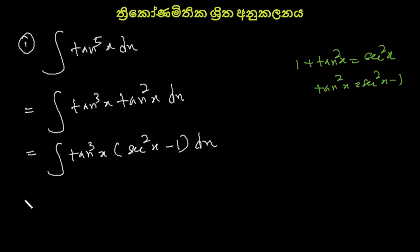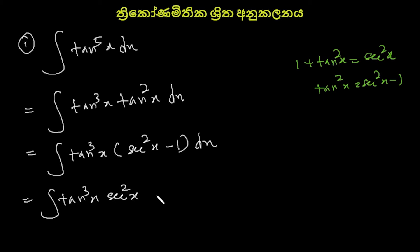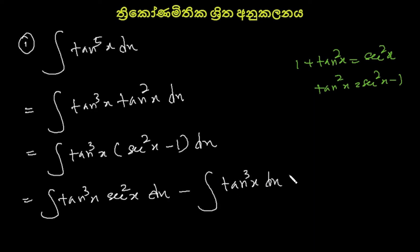So let's write the sentence. So here we have tan x, square x, or dx, or tan x dx.